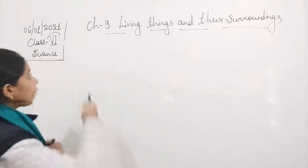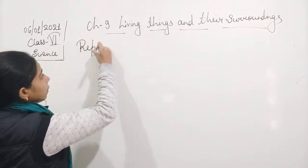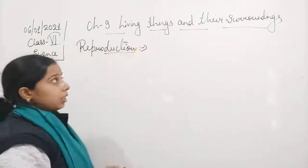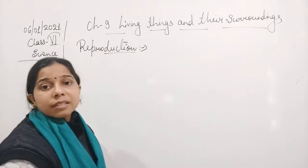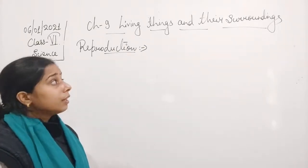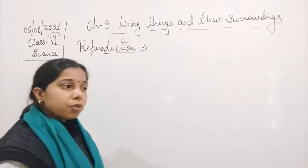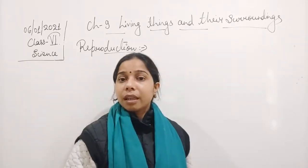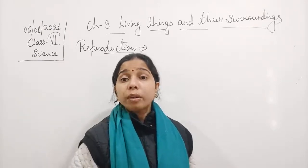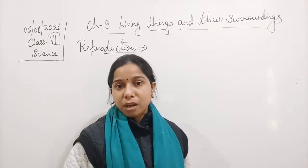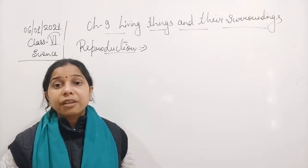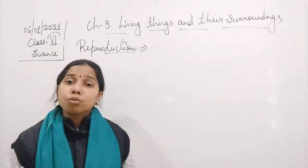We have started to understand another characteristic — that is reproduction. What is reproduction? Reproduction is a process in which a living organism gives birth to its young ones. We can say that the addition of a new member or giving birth to a member of its own species is known as reproduction. Different animals used to show different modes of reproduction.